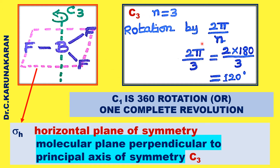C1 means 2π/n — therefore 360 degree rotation, which is nothing but one complete revolution. This plane is perpendicular to the molecular plane, called sigma h, also called horizontal plane of symmetry. The plane is perpendicular to the principal axis of symmetry.